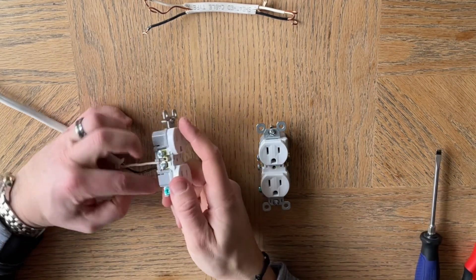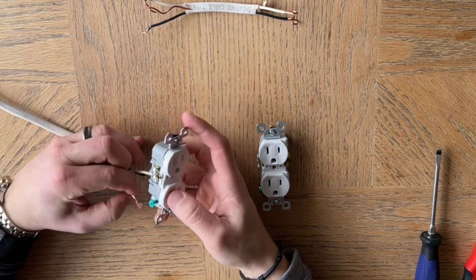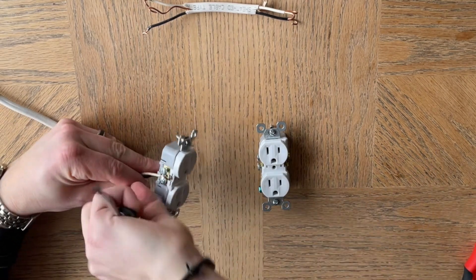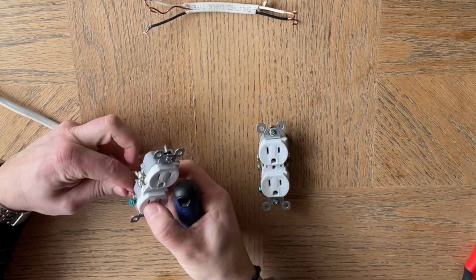So I always use the screws. Plus if you ever need to take it apart, it's a lot easier than the quick connect. All right, then the ground. Get this wired up and then show you the daisy chaining process.